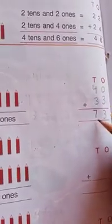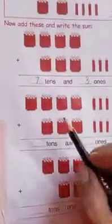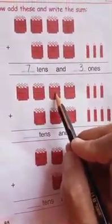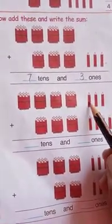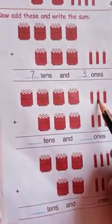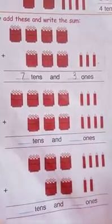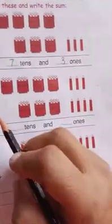You can cross-check your answer: zero plus three equals three, and four plus three equals seven. The answer is seventy-three. Now next: one, two — two; three — three; one, two, three, four — there are four tens and one, two, three — three ones. So I will write here four tens and three ones.